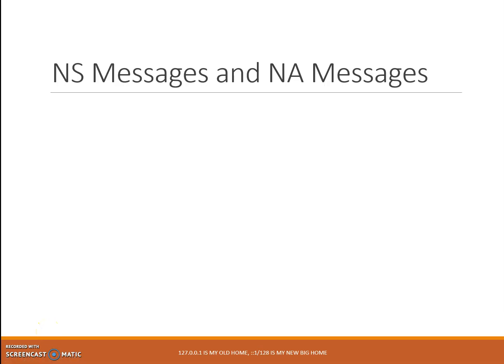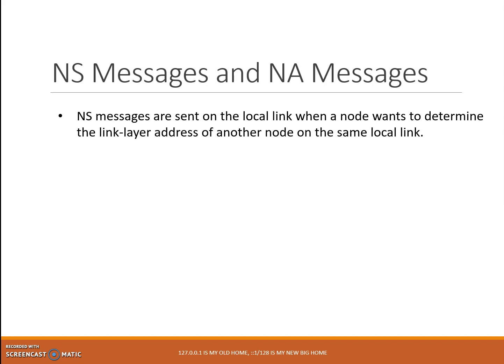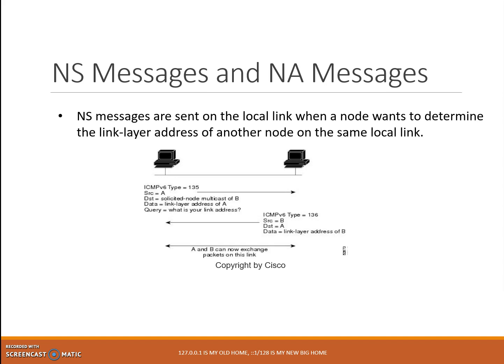NS messages and NA messages are used by a device to request the link layer or MAC address from another node on the same link. When a node, let's say Node A, wants to determine the link layer address of another node, Node B, it sends an NS message with its own address as the source, and the destination address is the solicited-node multicast address that corresponds to the IPv6 address of the destination node.